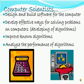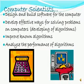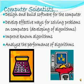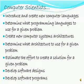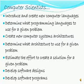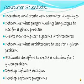Computer scientists design and build software for computers, develop effective ways of solving problems on computers, improve and analyse the performance of known algorithms, introduce and create new computer languages, determine what programming languages to use for a given problem, and create new computer systems architectures while determining what architecture to use for a given problem.